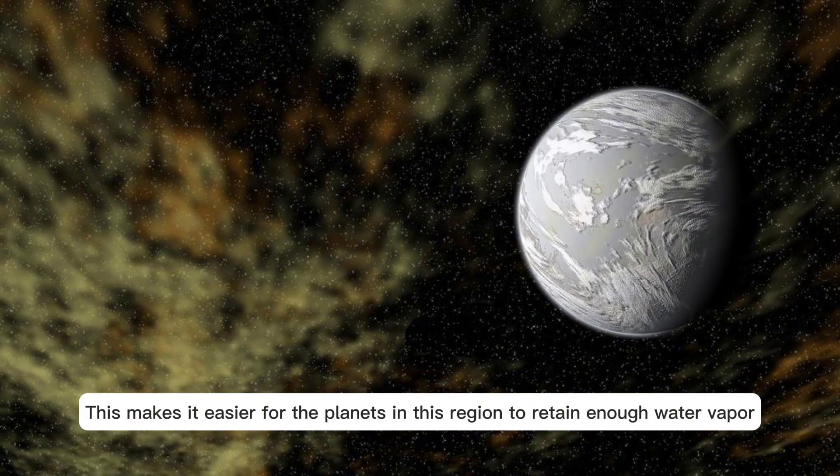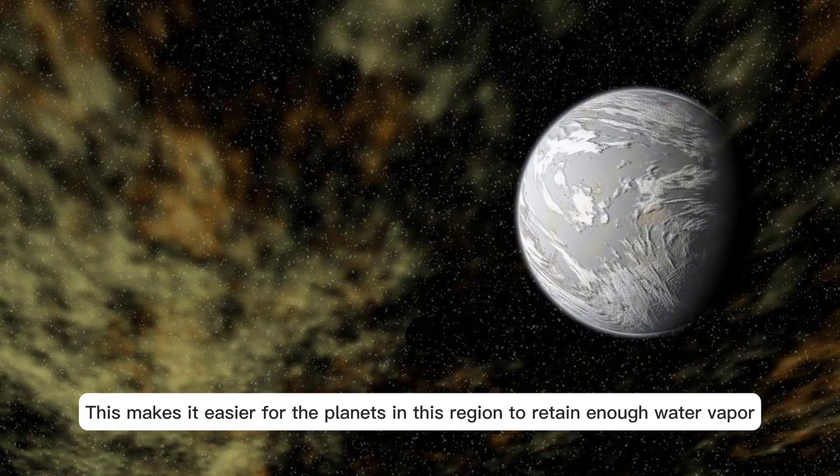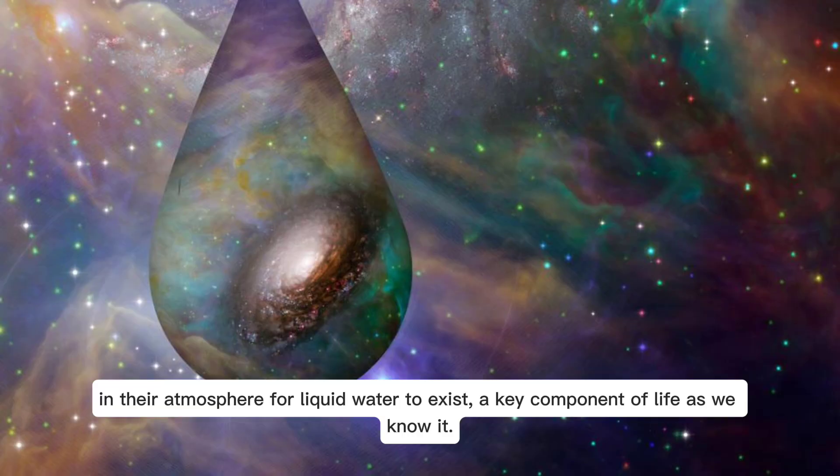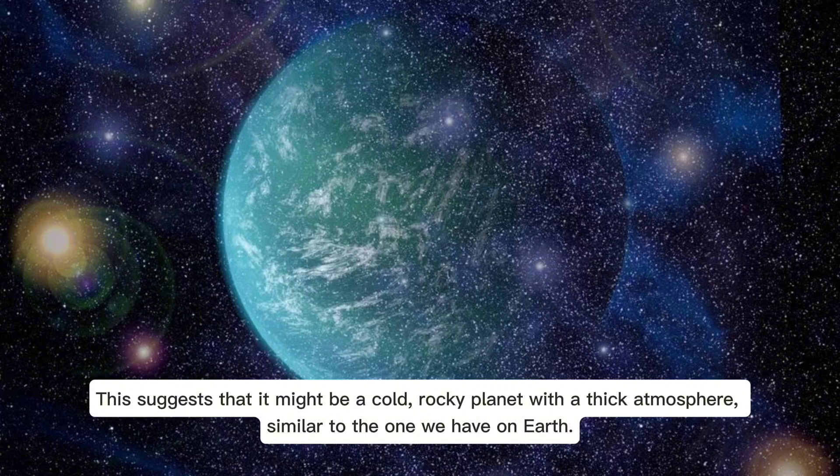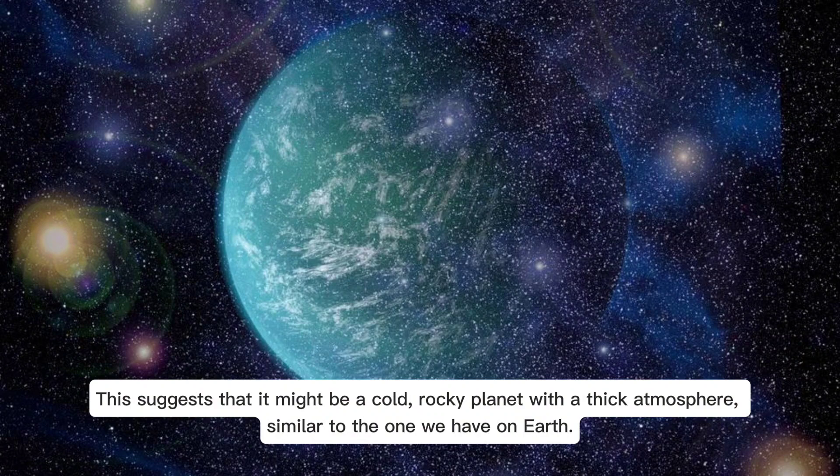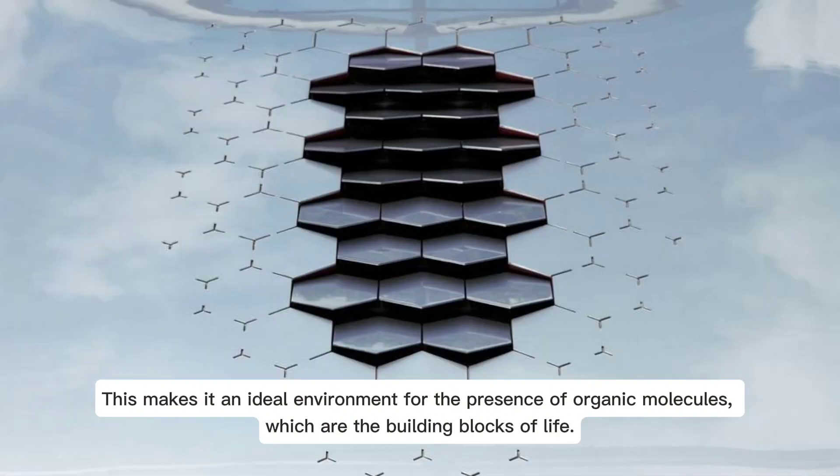This makes it easier for the planets in this region to retain enough water vapor in their atmosphere for liquid water to exist, a key component of life as we know it. Moreover, Kepler 69c is a small planet with a mass that is just half that of Earth's. This suggests that it might be a cold rocky planet with a thick atmosphere similar to the one we have on Earth. This makes it an ideal environment for the presence of organic molecules, which are the building blocks of life.